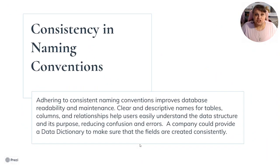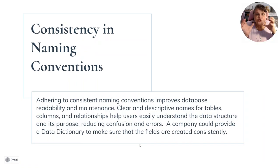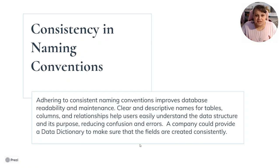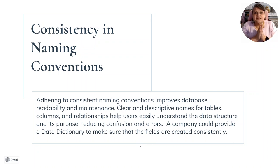Consistency and naming conventions: because it's a database, if you're not consistent, you end up with data that is not clean and you have to clean it. Normalization and doing a data dictionary can really help. You give the people entering information something that explains each field and how it's supposed to be entered, to make sure the data is consistent and clean. Adhering to consistent naming conventions improves database readability and maintenance. A company could provide a data dictionary to ensure fields are created consistently — for example, you don't write California, you put CA, or you only want the first five digits of a zip code.